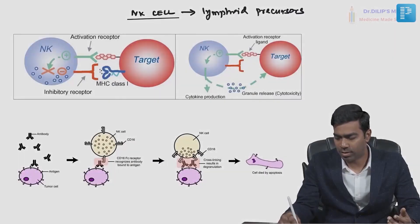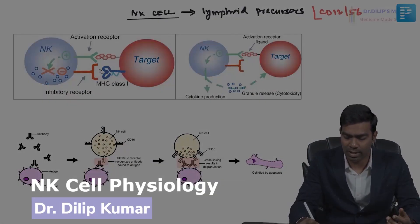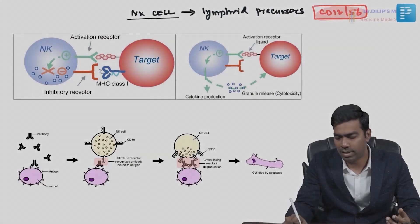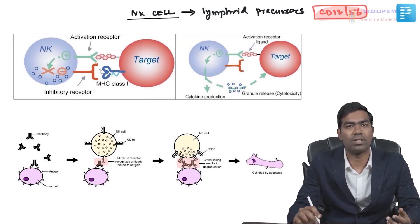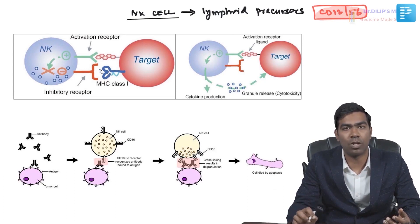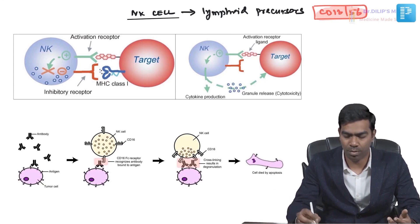The markers of these cells — natural killer cells — are typically two markers. The first one is called CD16 and the second one is called CD56. These are the two markers. The way to remember these markers for natural killer cells, we have a traditional mnemonic: we call them 'Sexy 16' for natural killers.